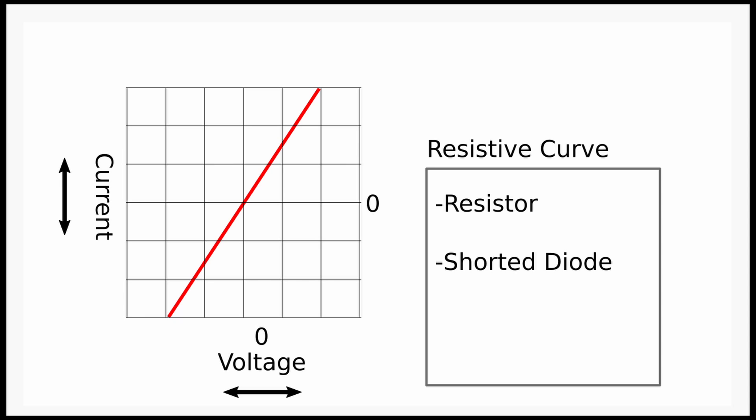With a resistive load such as a resistor or a light bulb, we can expect the trace to look like this. Notice the linear relationship between voltage and current: the more voltage, the more current. A negative voltage on the left side of the axis creates a negative current on the bottom side.